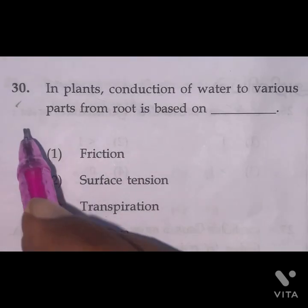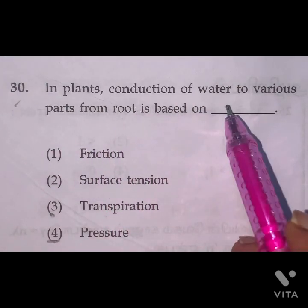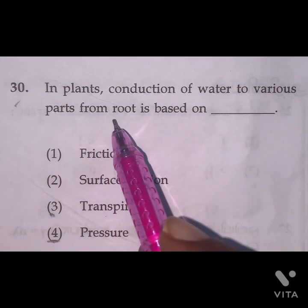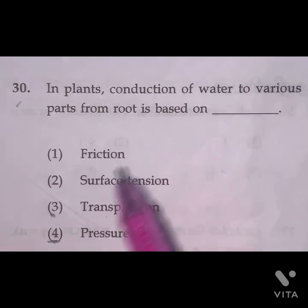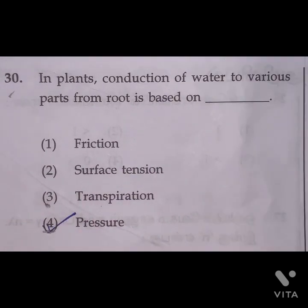Question 30: In plants, conduction of water to various parts from the root is based on pressure. Option 4 is the right answer.